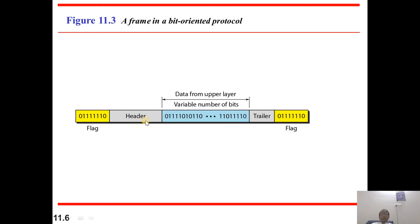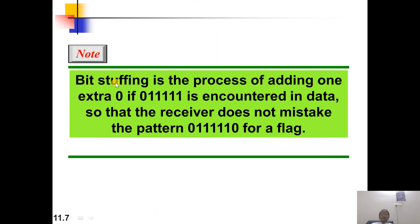Here the flag field is expressed in a bit-oriented protocol. Bit stuffing is the process of adding one extra zero bit whenever five consecutive ones are encountered in data, so that the receiver does not mistake the pattern — zero, five ones, zero — for a flag field. This is the representation of the flag field, and wherever you observe zero, five ones, and zero, it will automatically be treated as a flag field. For that reason, we add one more zero as an extra bit.